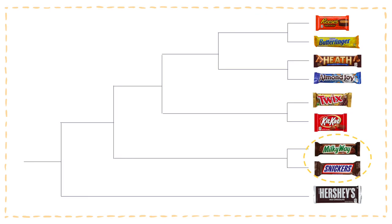Our first operational taxonomic unit is the Milky Way bar and Snickers bar. These two bars share a common ancestor as they both contain caramel. From the branches on our tree, we observe that the Milky Way bar is more closely related to the Snickers bar than it is to the Hershey bar.